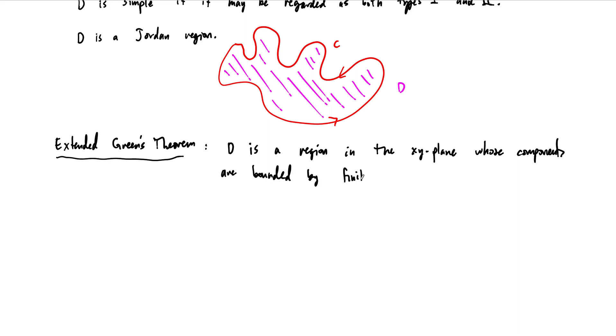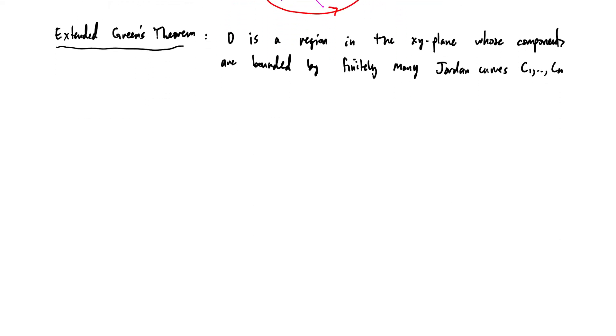In this case, I'm going to say finitely many Jordan curves, C1 up to, let's say, C sub N. And so, the picture here, there's a couple different pictures. One picture is that our curves could just be, you know, the same usual kind of Jordan blobs in some sense.